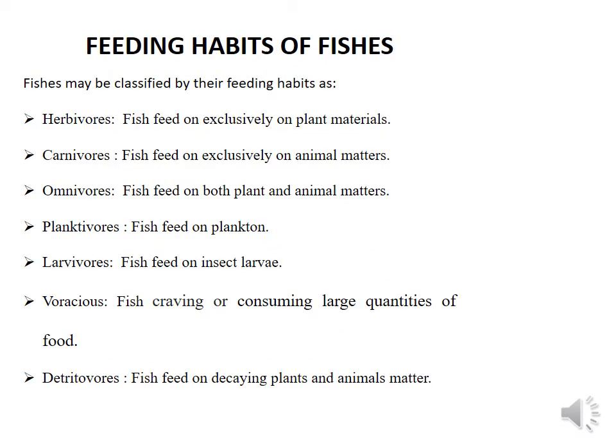Fishes may be classified by their feeding habits into different groups. The first one is herbivores — herbivorous fishes include those fishes which feed exclusively on plant materials. Second, carnivorous fish feed exclusively on animal matter. Omnivorous fishes feed on both plant and animal matter. Planktivorous fish feed on plankton. Larvivorous fish feed on insect larvae. Voracious fish crave consuming large quantities of food. The last one is detritivorous fishes, which feed on decaying plant and animal matter.